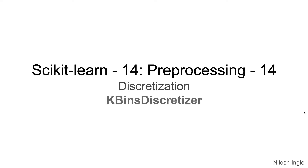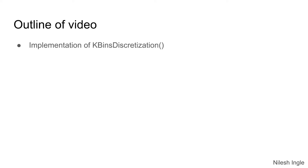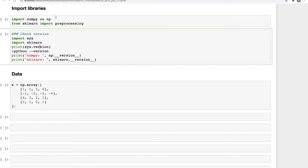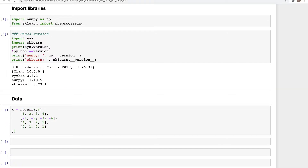Hello and welcome to Learn Data. I'm Nilesh and in this video we'll continue to learn about pre-processing in scikit-learn. In the previous video we looked at the intuition behind the KBins Discretizer. In this video we'll look at the actual implementation in Jupyter Notebook. Here I've imported two libraries: NumPy and pre-processing from sklearn, and these are the versions I'm using.